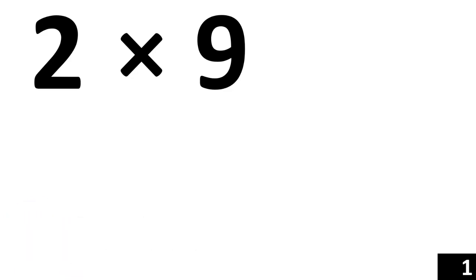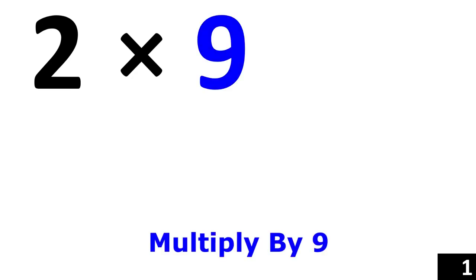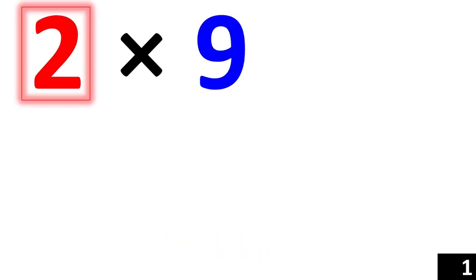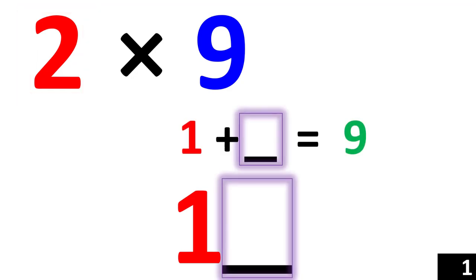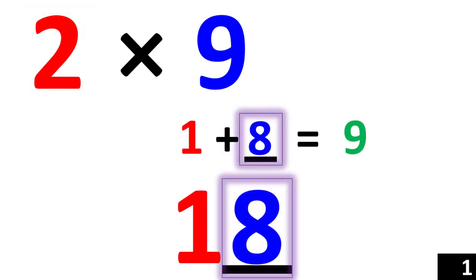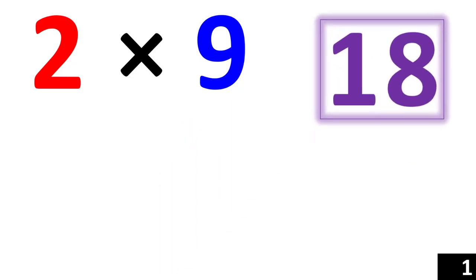The first example is 2 times 9. First, we look at the number 2 and we say, what's 1 less than the number 2? That's 1. So, 1 is your first number. Then we say, 1 plus what number would give us 9? 1 plus 8 gives us 9. So, 8 is your second number and 18 is your answer.